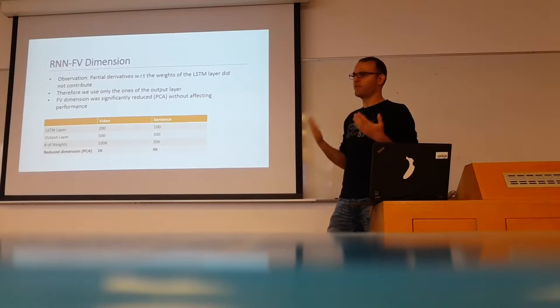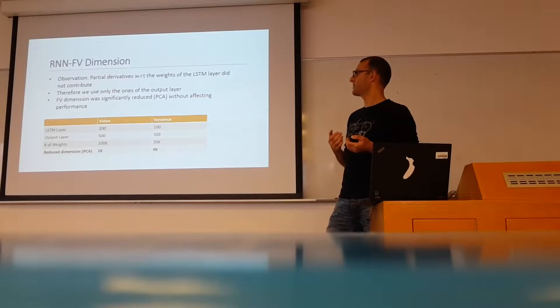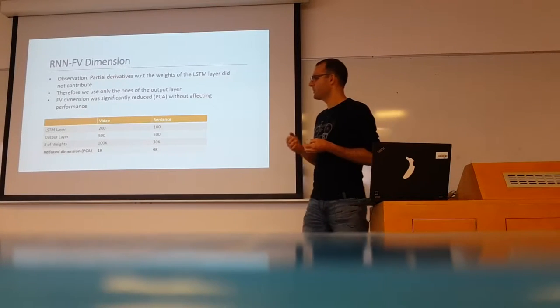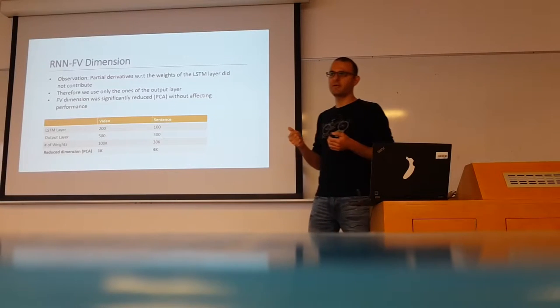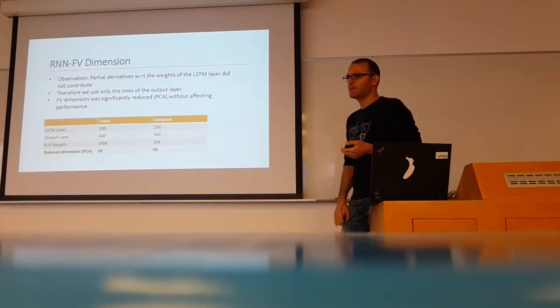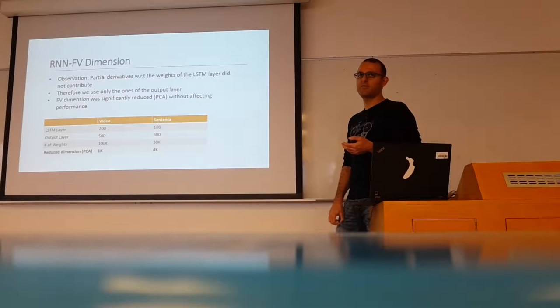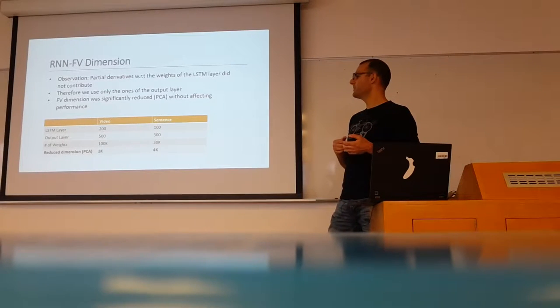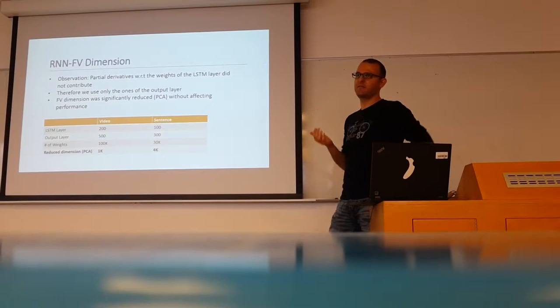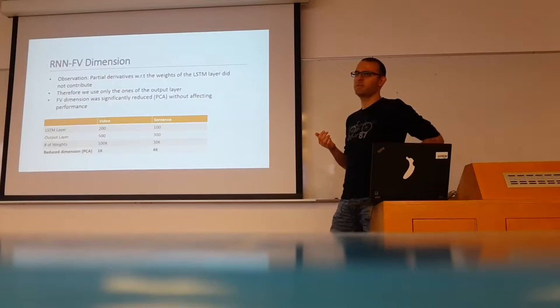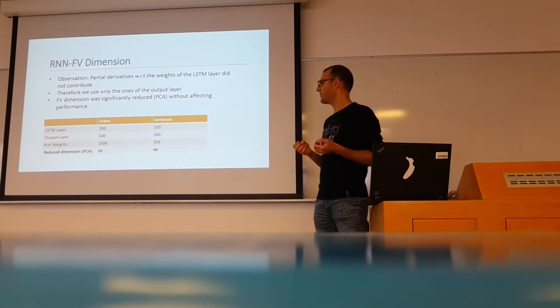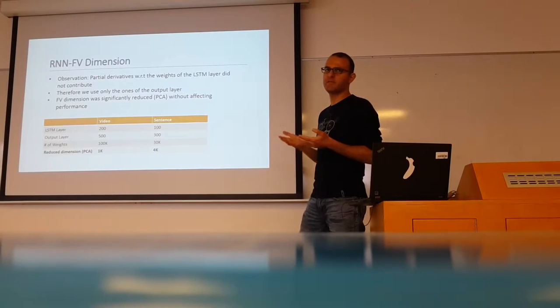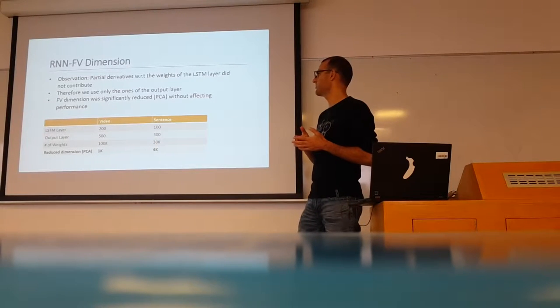So let's talk about the number of rates and the RNN Fisher vector dimensions. There is a problem because the number of rates in the network is not small, and the number of rates would be exactly the length of this gradient. We don't want this gradient to be too big because it will be hard to use it for classification or whatever we would like to do.